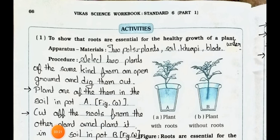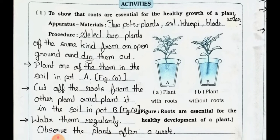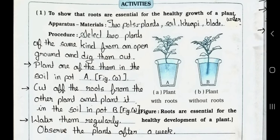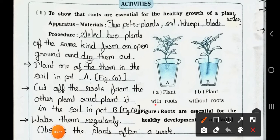Here the activities are there. Number one: to show that roots are essential for the healthy growth of a plant. See plant A and plant B. Plant A is the plant with roots, and plant B is the plant without roots.